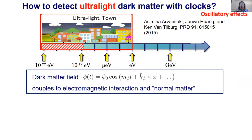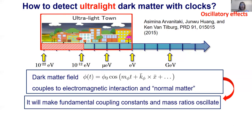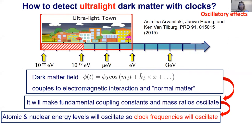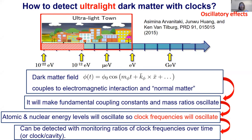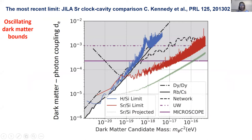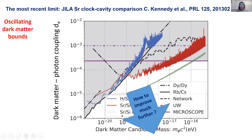The main idea, from the initial paper by Arvanitaki, Dimopoulos, and co-authors, is that if the dark matter field couples to electromagnetic interaction or normal matter — linearly or quadratically — it will make fundamental coupling constants and mass ratios oscillate. If that happens, atomic or nuclear energy levels will oscillate, so clock frequencies will oscillate, and measuring ratios of clock frequencies or clock-to-cavity comparisons can detect this. The current bounds are shown, with a projected strontium-to-silicon cavity limit in green.